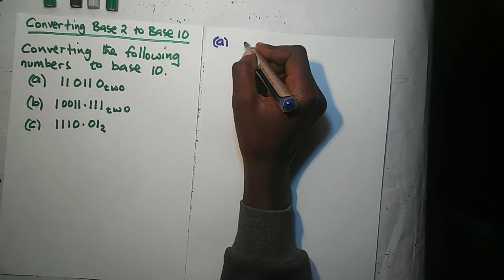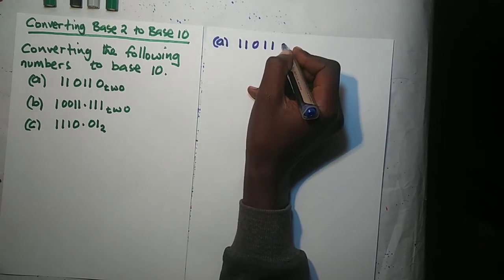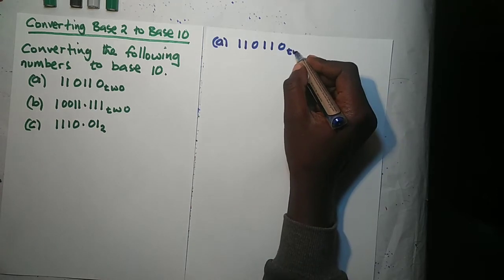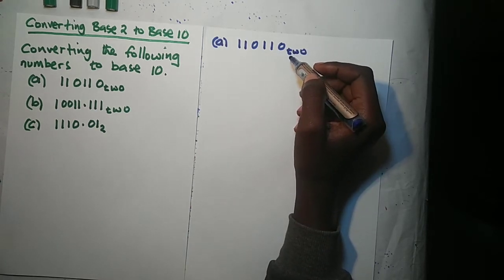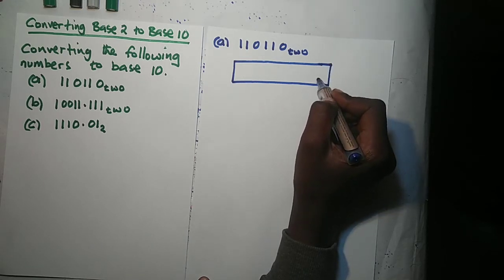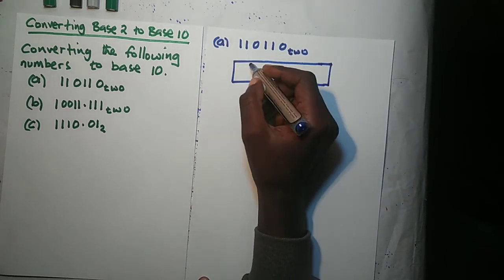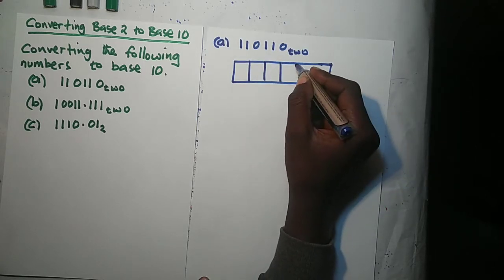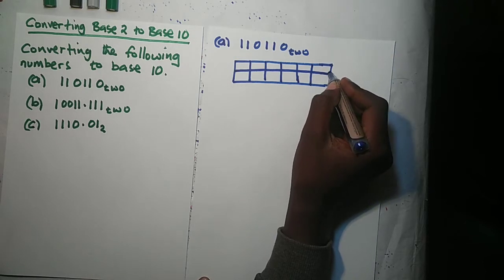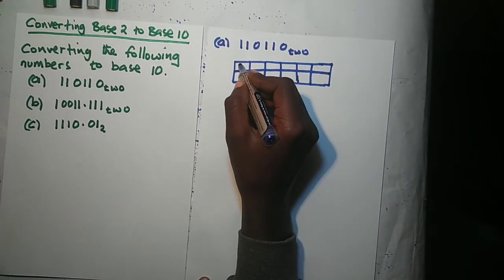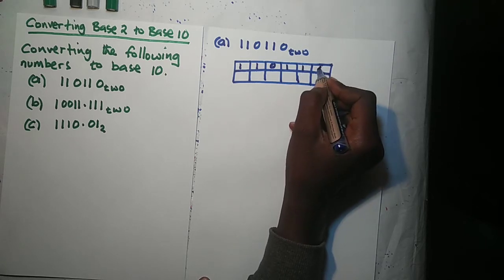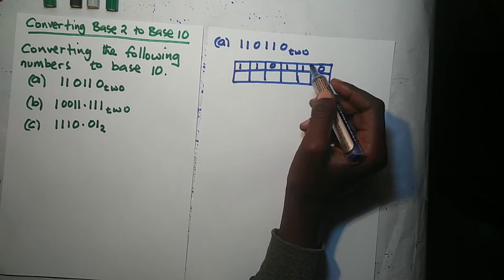Starting with the first question: 110110 in base 2. The easiest way to convert this number to base 10 is to draw up a grid. We have 6 numbers, so we create 6 boxes. We write these numbers in the top boxes: 1, 1, 0, 1, 1, 0.